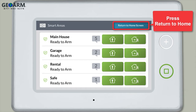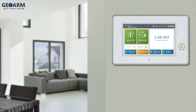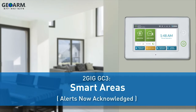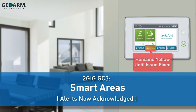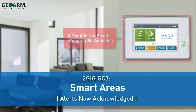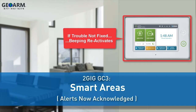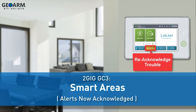Finally, press Return to Home Screen. The alerts have been acknowledged and the panel will stop periodically beeping. However, the smart areas button will remain yellow until the issue causing the trouble alert is fixed. If the issue causing the trouble alert is not fixed, the periodic beeping will eventually reactivate in order to let the user know the trouble condition still exists. The user will then need to re-acknowledge the trouble once again.